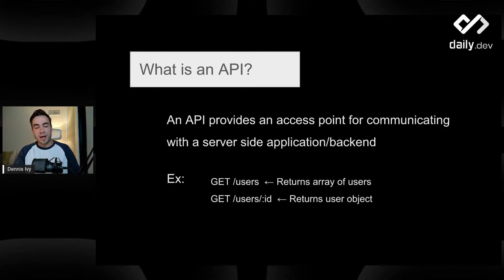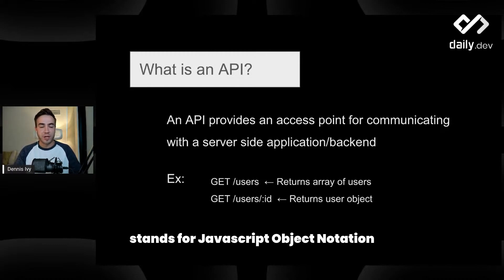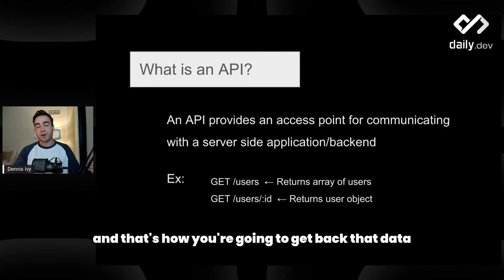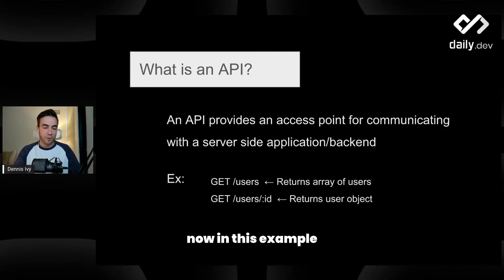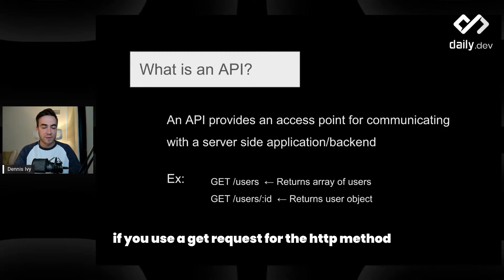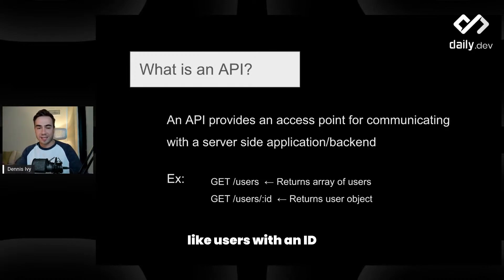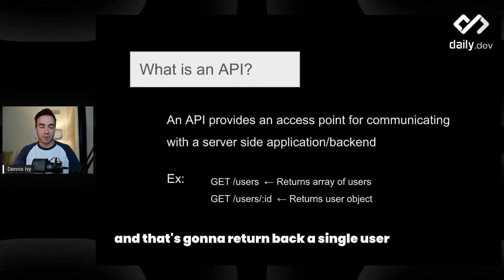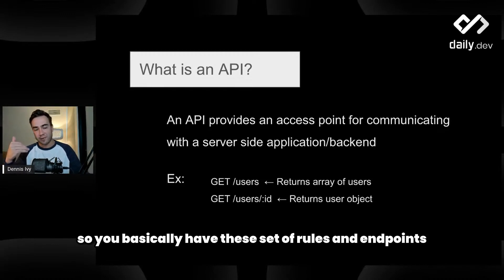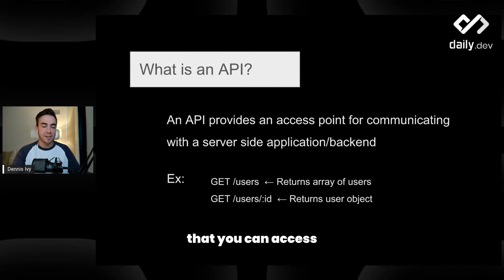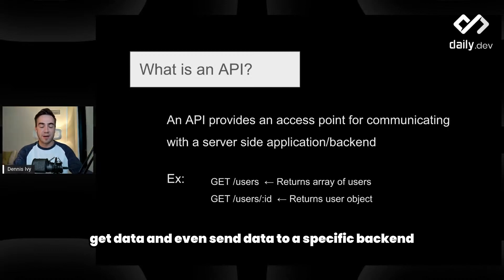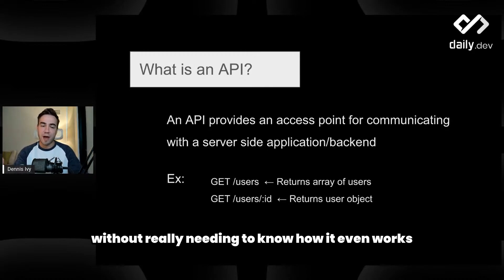JSON looks a lot like JavaScript. It stands for JavaScript Object Notation. If you're a Python developer, it looks a lot like Python dictionaries, and that's how you're going to get back that data. Now in this example, if you use a GET request for the HTTP method to get back a single user, you'd hit an endpoint or URL like users with an ID, and that's going to return back a single user. So you basically have these set of rules and endpoints that you can access to work with data, get data, and even send data to a specific backend without really needing to know how it works.